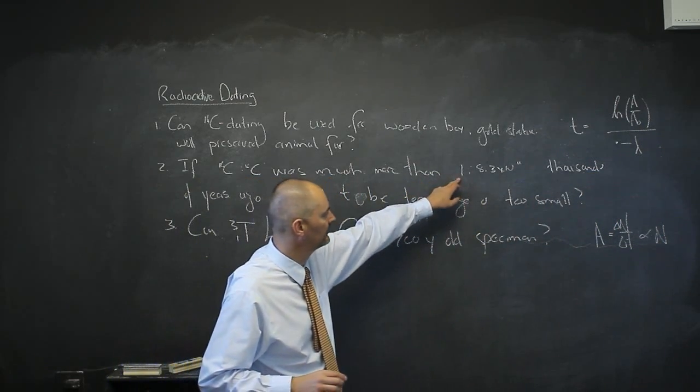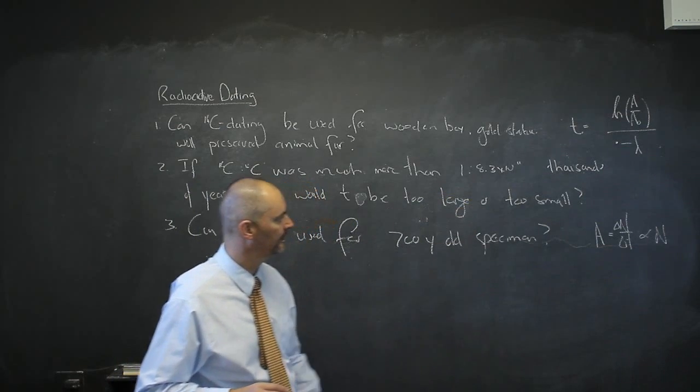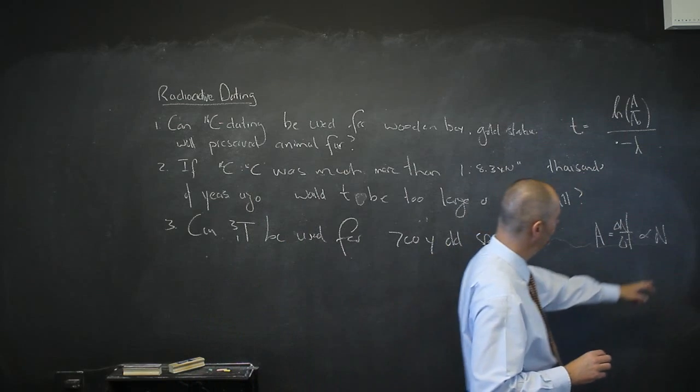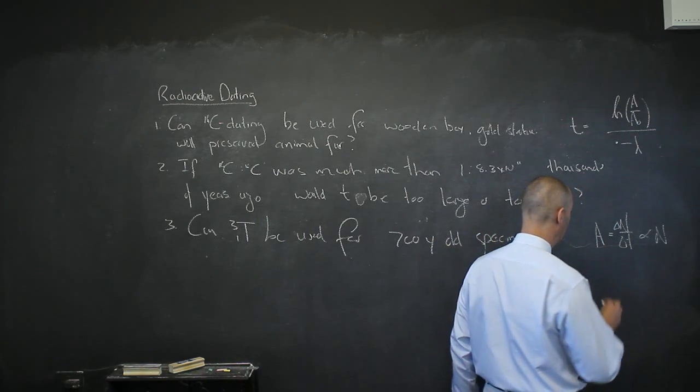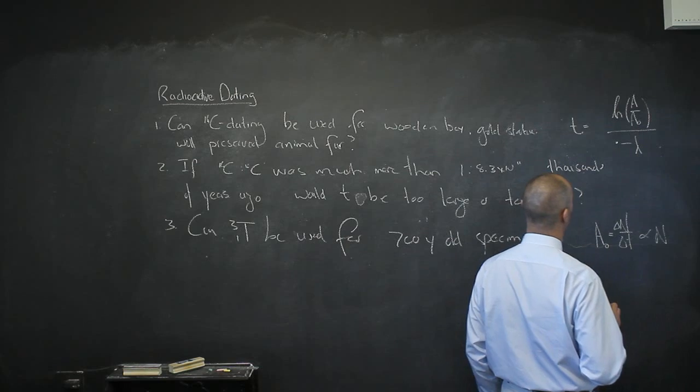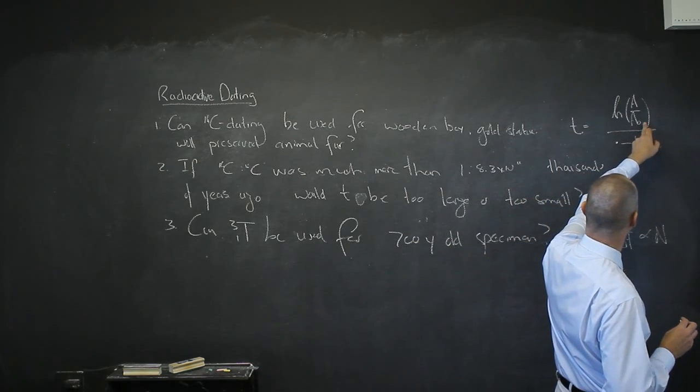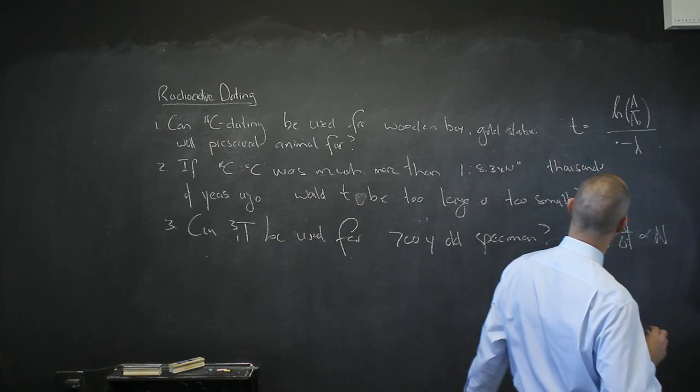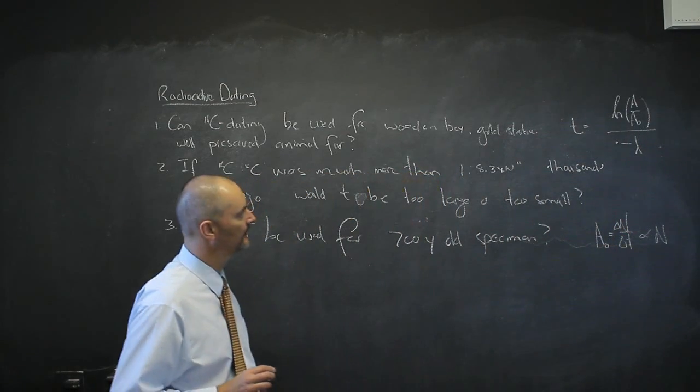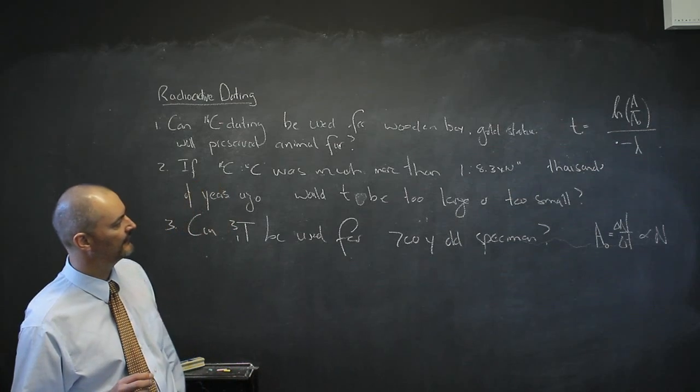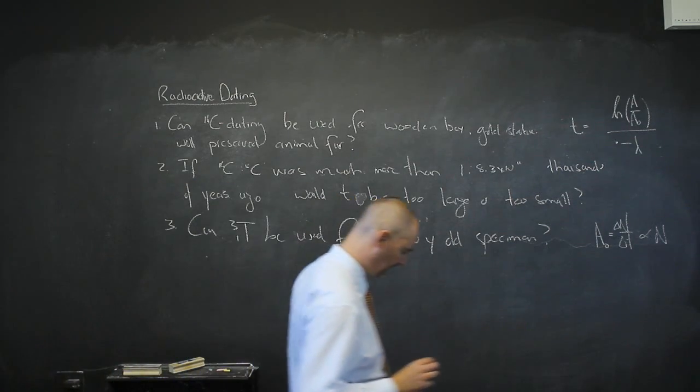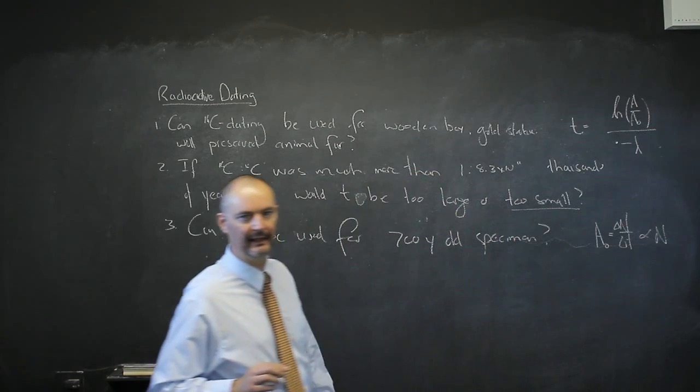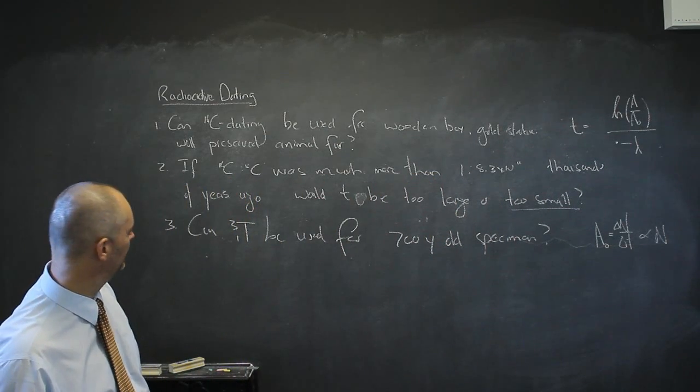If this ratio was much larger, 2 or 3 times that, then n would have been higher. That means my activity then, A0, would have been much larger. If this was much larger, then this fraction is smaller and that means t is too small. I'll underestimate the age of my specimen.